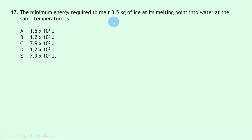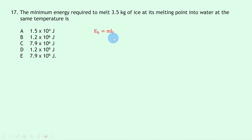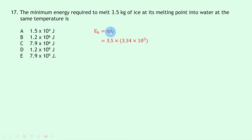Question 17: the minimum energy to melt 3.5 kilograms of ice at its melting point. Melting is fusion, so use EH = mLF = 3.5 × 3.34 × 10⁵ = 1.2 × 10⁶ joules. Make sure to use the latent heat of fusion value, not vaporisation. Answer is B.